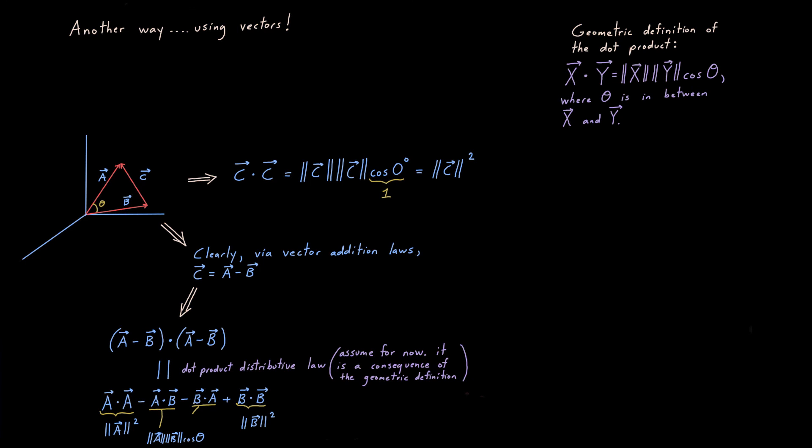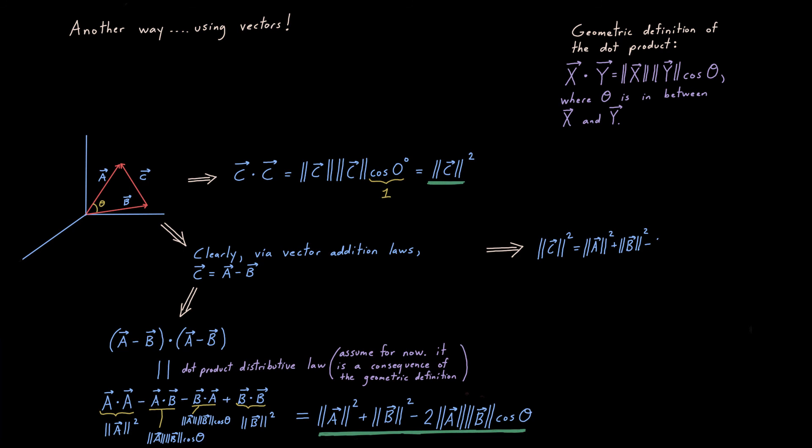A dot A is magnitude of A squared, B dot B is magnitude of B squared, and A dot B is the same thing as B dot A, the definition of the dot product of A and B. Combining like terms gives me minus two A magnitude B magnitude cosine of theta. These two underlying quantities in green are the same thing because C is the same thing as A minus B. Here we have our law of cosines.